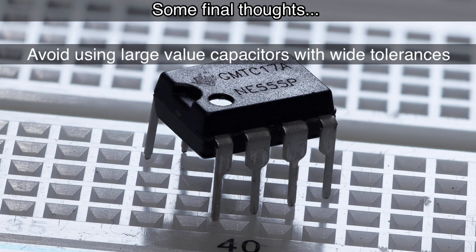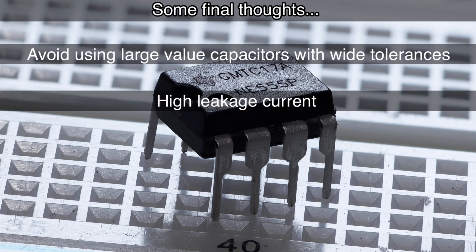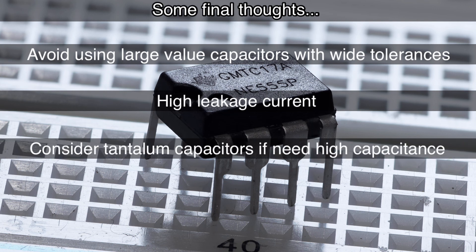Now another problem you may encounter with these high value capacitors is its high leakage current. That can also affect timing accuracy. If your project requires a large capacitance, try looking at something like a tantalum capacitor with a lower leakage current.